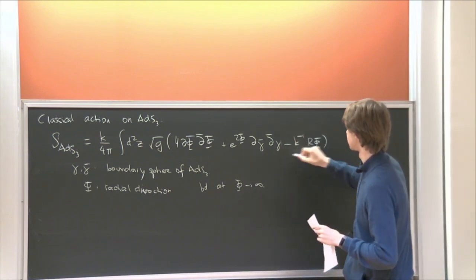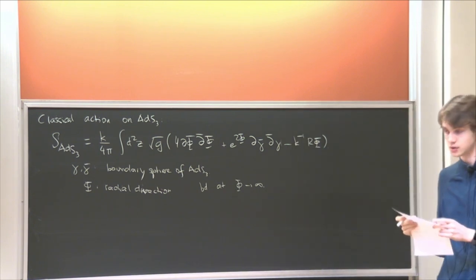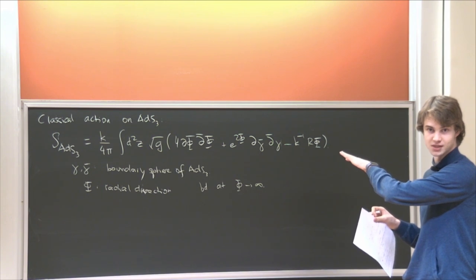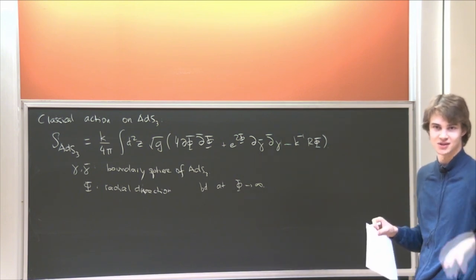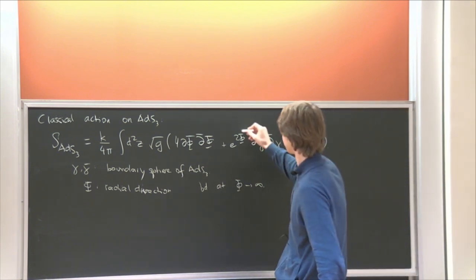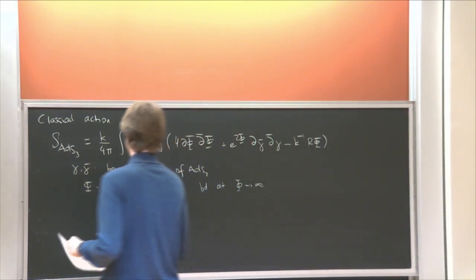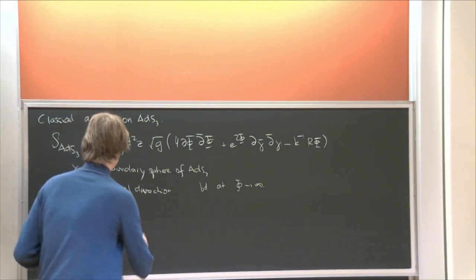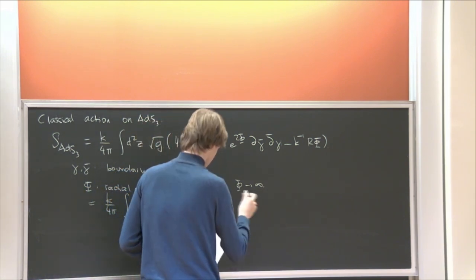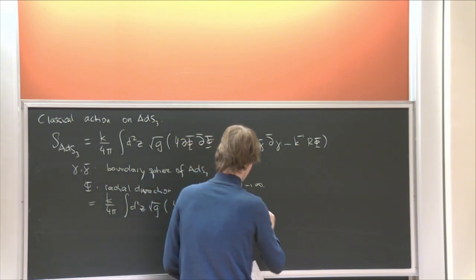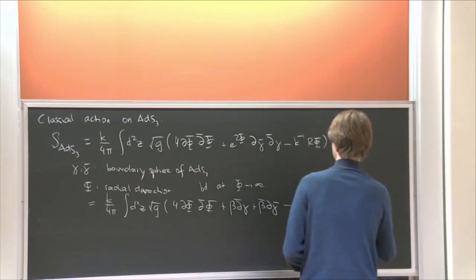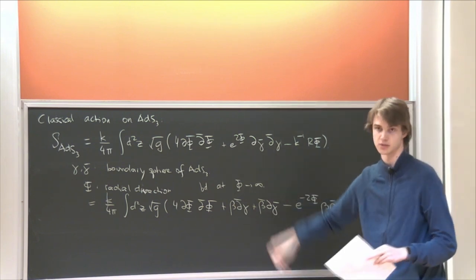The last term in the action is generated at the quantum level through renormalization. If I put K=1, it wouldn't make any sense semi-classically, so for now I'm not putting K=1, but there's a sense in which we can go to K=1. Near the boundary, this action actually becomes quite bad because there's this exponential divergence. What you can do is introduce auxiliary fields beta and beta bar. You can integrate out beta again to get back to the original action, but in this form the boundary is much nicer behaving — if phi goes to infinity, the problematic term disappears.